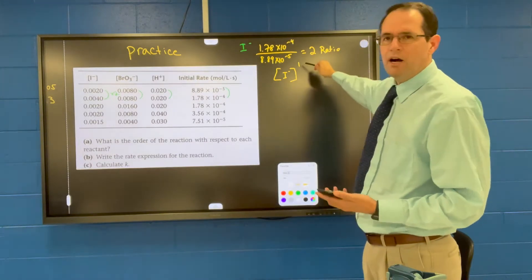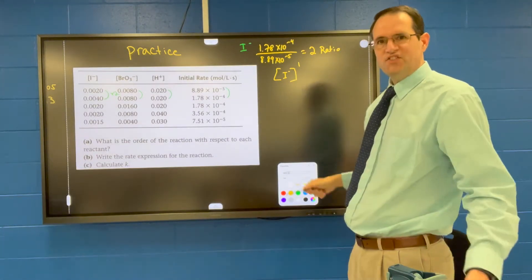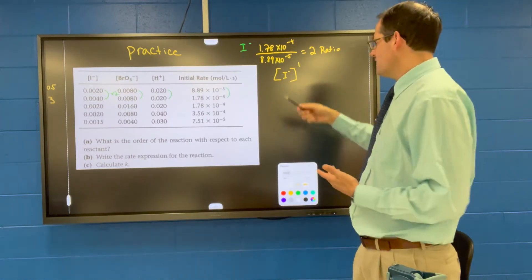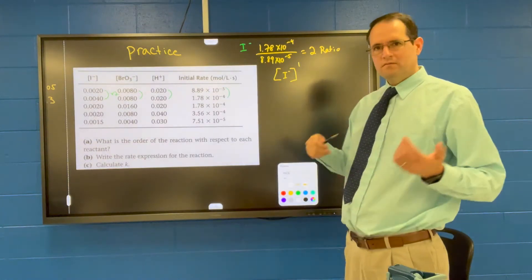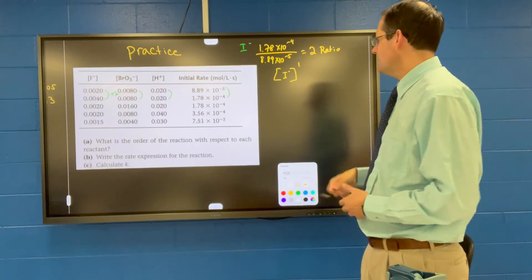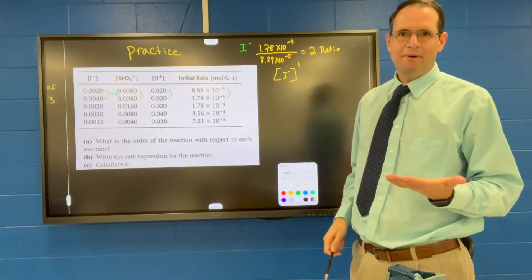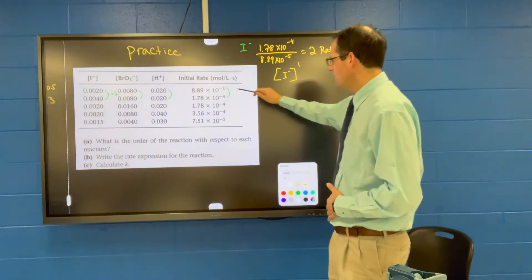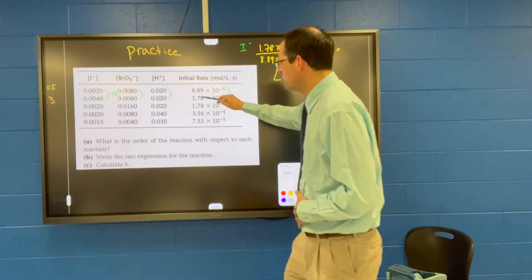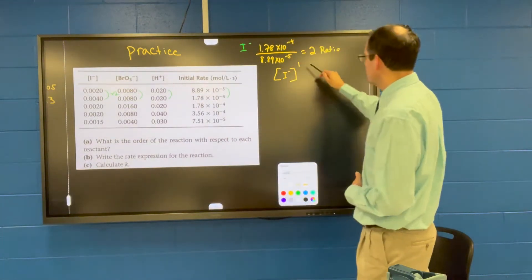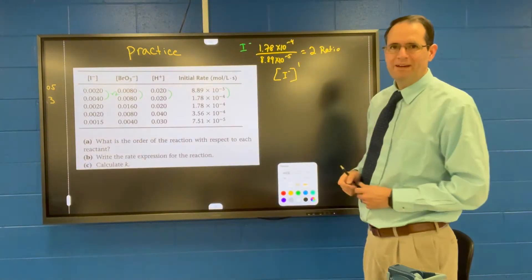And that's because we have a power of one. Okay so if iodide is five, and we double that to 10, the ratio is going to be just times two. So if you increase this by two times, because it's only raised to the first power, the rate goes up by two times. So that's how we know it's first order with respect to iodide.